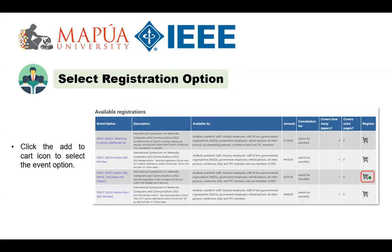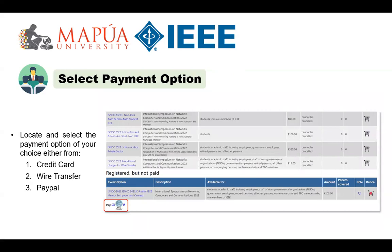Next, once you have located the appropriate registration option, click the Add to Cart icon and check the bottom of the page to proceed to the payment process. Select the applicable payment options located at the bottom left-hand corner of the page by clicking the icons associated with credit card, wire transfer, or PayPal.